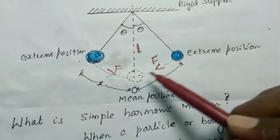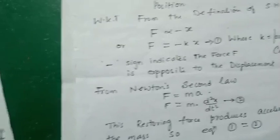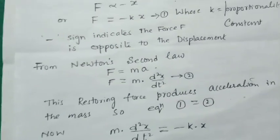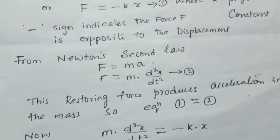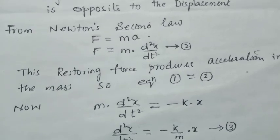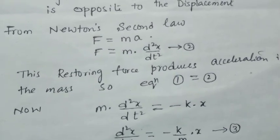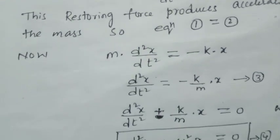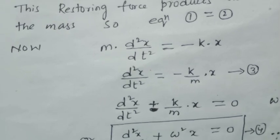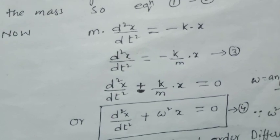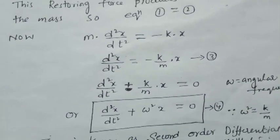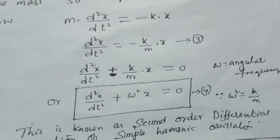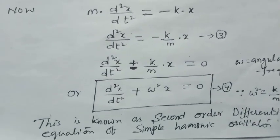The restoring force produces acceleration in the body to move back and forth about the mean position, that's why we apply Newton's second law: F = ma = m(d²x/dt²). Equating equation (1) and equation (2), we get m(d²x/dt²) = −kx. Rearranging: d²x/dt² = −(k/m)x, which gives d²x/dt² + (k/m)x = 0. Replacing k/m with ω², we obtain d²x/dt² + ω²x = 0, where ω² = k/m. This is the second-order differential equation of a simple harmonic oscillator.